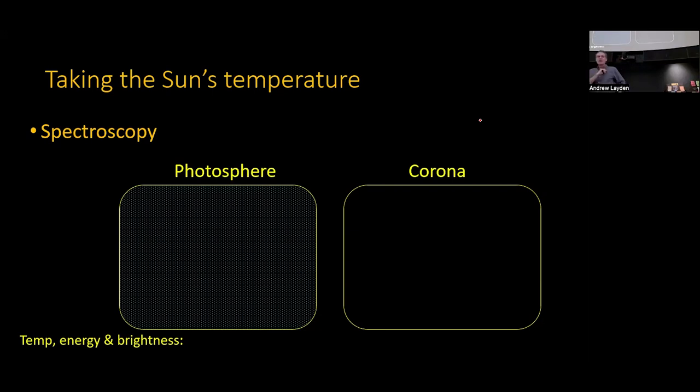Where do I get those numbers from is a good question. How do I know that the photosphere is 6,000 Kelvin or 10,000 degrees Fahrenheit? How do I know that the corona is a couple million degrees Fahrenheit? The answer comes from a study, a way of studying light called spectroscopy. If you pull out your little clear plastic sheets, we're going to study that a little bit now.